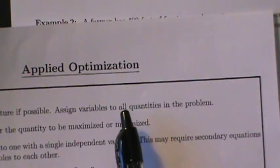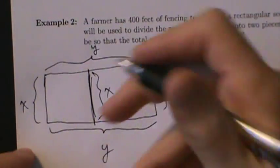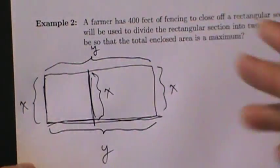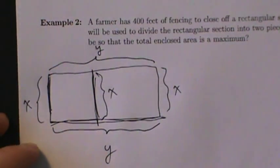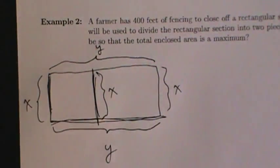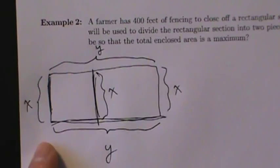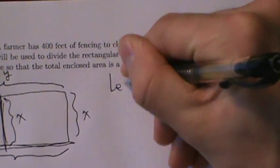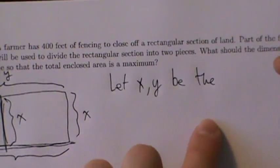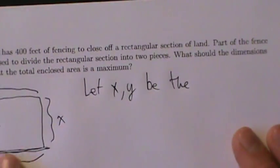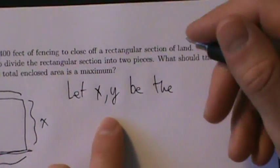Now assign variables to all quantities in the problem. We don't have to label every little piece, but labeling x and y is really enough. We assign x and y as the dimensions — so let x and y be the dimensions. Those are the dimensions we're looking for: what should the dimensions be so that the total enclosed area is a maximum? We're looking for these values of x and y.